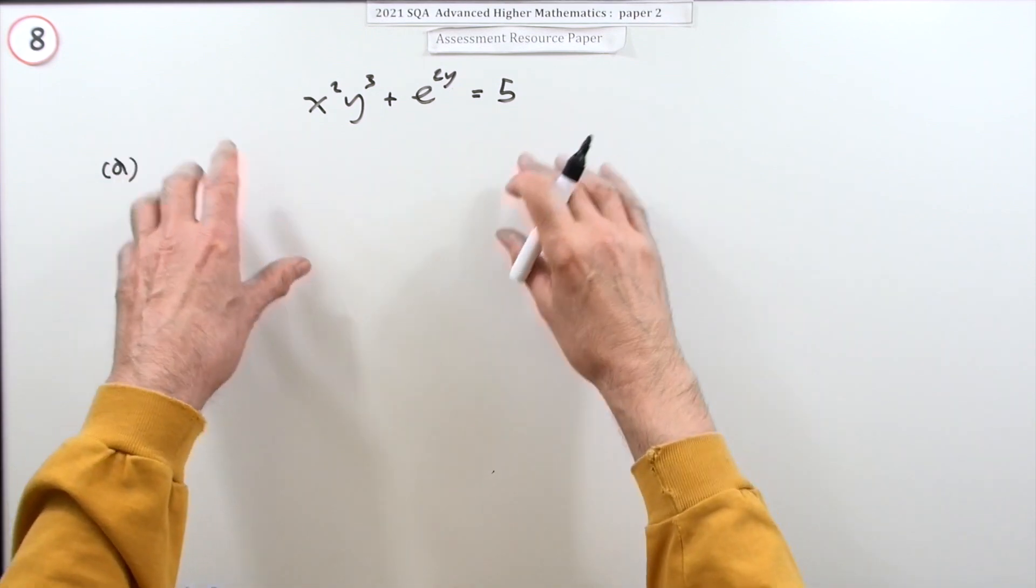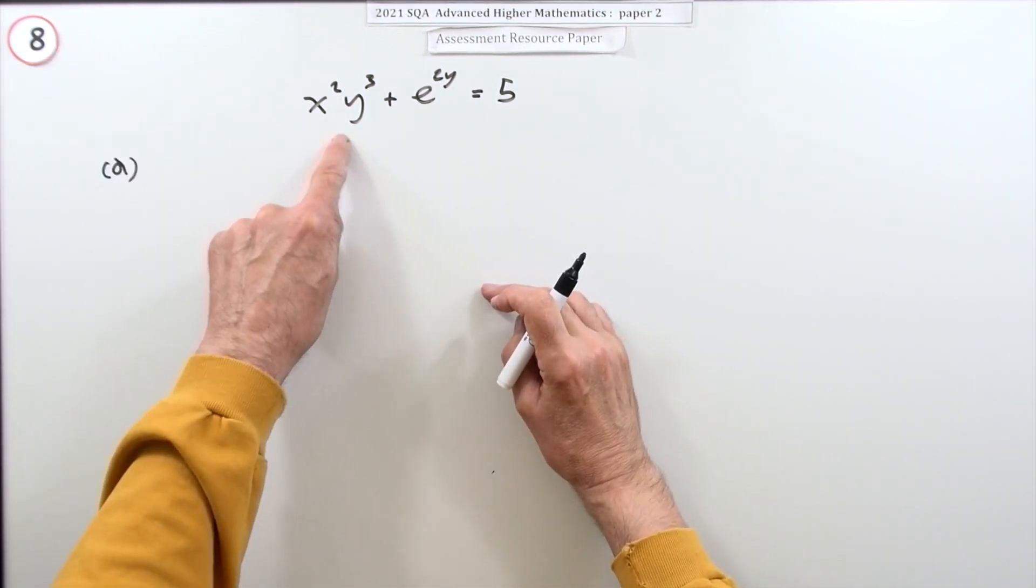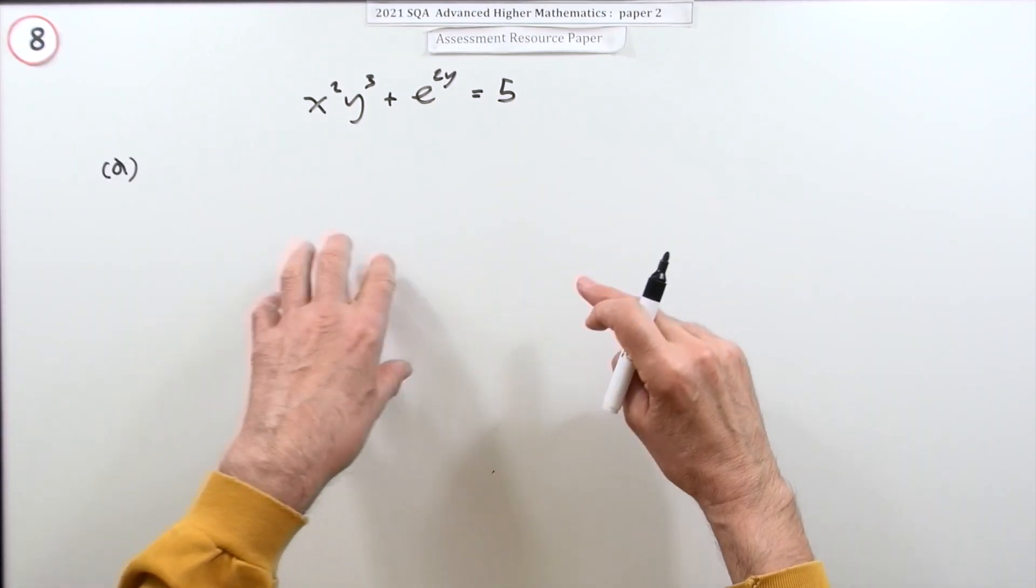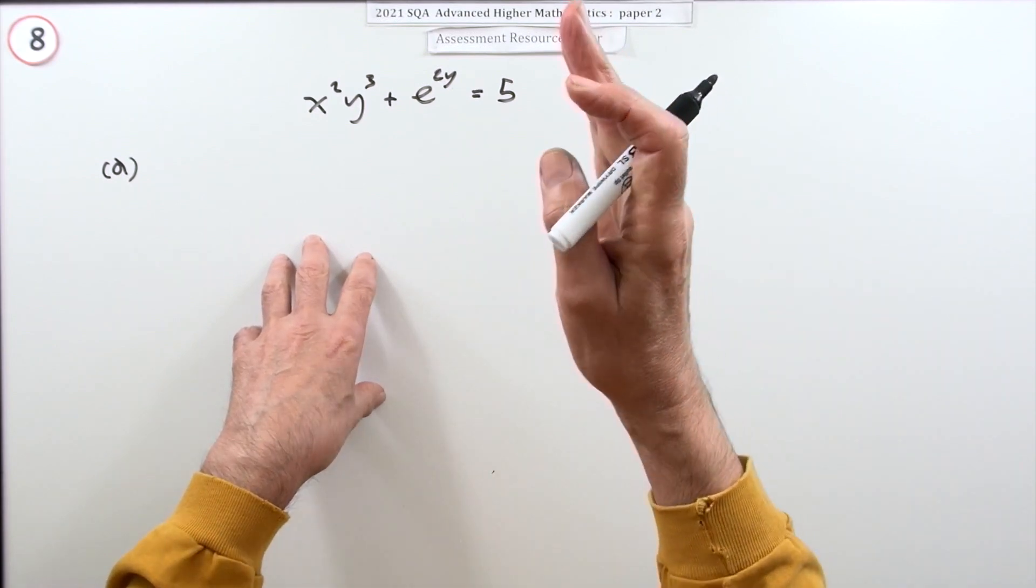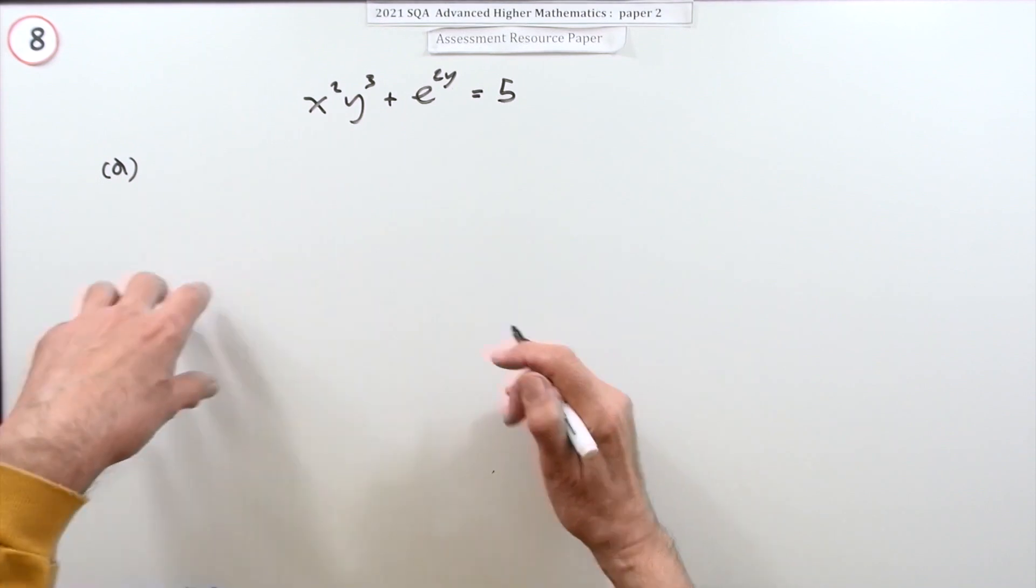Nevertheless, differentiate. You just use the rules of differentiation. There's a product, so you're going to use the product rule, and remember y is a function of x, so there'll be the chain rule because you've got a function of a function. So you just do the three parts. The first part's a product.